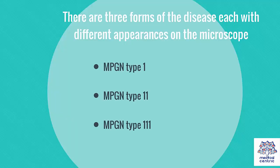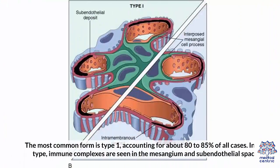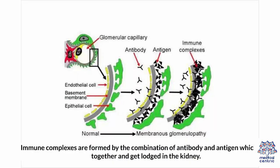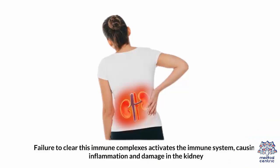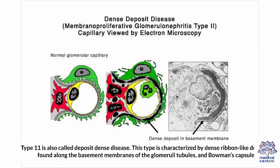There are three forms of the disease, each with different appearances on the microscope: MPGN type 1, type 2, and type 3. The most common form is type 1, accounting for about 80-85% of all cases. In this type, immune complexes are seen in the mesangium and subendothelial space. Immune complexes are formed by the combination of antibody and antigen, which bind together and get lodged in the kidney. Immune complexes must be removed from tissues and disallowed from accumulating and forming deposits throughout the body. Failure to clear these immune complexes activates the immune system, causing inflammation and damage in the kidney.